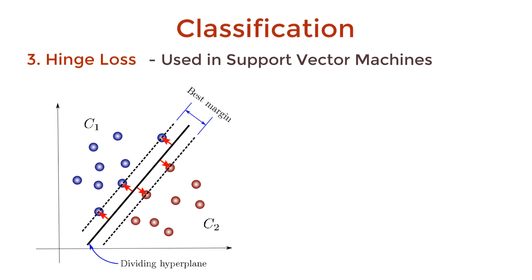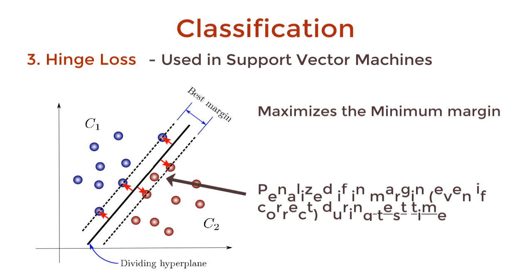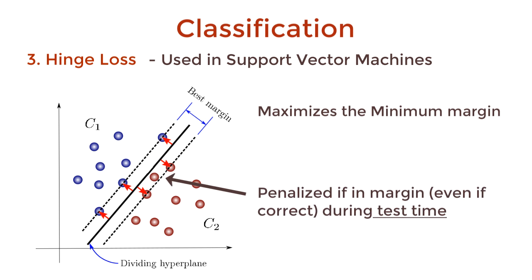Another loss is the hinge loss, typically used in support vector machines for classification tasks. Minimizing this, we get a boundary that splits the data well and is as far away from every data point as possible. That is, it maximizes the minimum margin from the data points. This loss penalizes data points even if they are correctly labeled if they lie in this margin. I've made several overly mathematical videos on kernels and SVMs. Check it out if you want to lower your self-esteem.